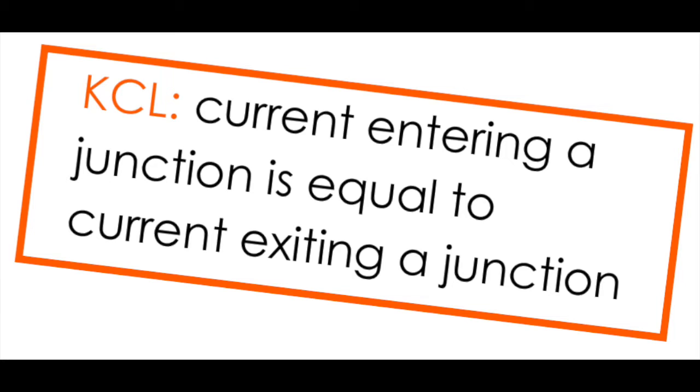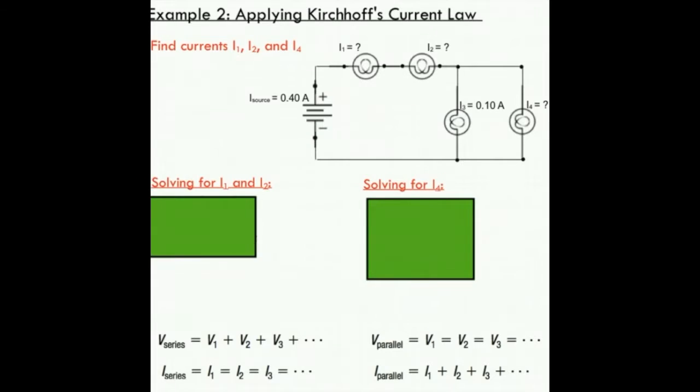Using Kirchhoff's current law, we know that current entering any junction is equal to the current exiting that junction. We're going to take a look at the circuit. I want the current going into this junction here. I've got a current leaving my source that's 0.4 amperes. I know that the current that's going to enter at this junction has to be the same as this current here.